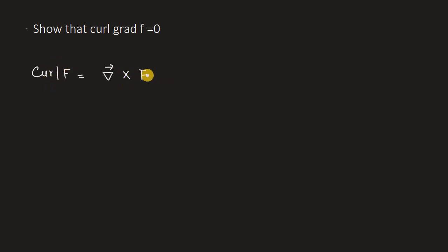So here, like I explained before in my previous videos, to find curl of f, we need to do the gradient cross product with the function. Because it's saying to find the curl of the function, so we cross product it with the function. But here we need to find the curl of grad of f. So in this case, the function here is grad of f, and you're going to replace this f with grad of f.